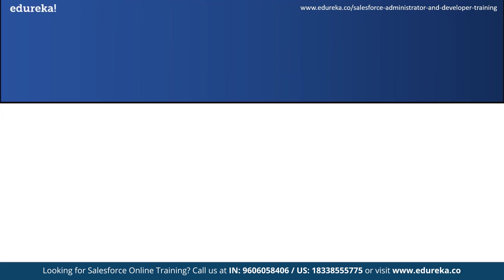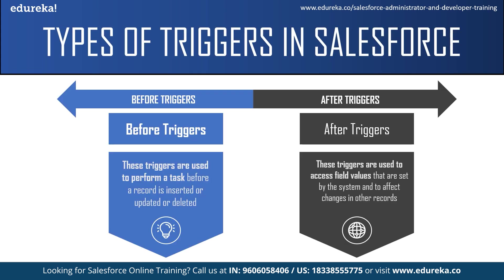There are two types of triggers in Salesforce: the before trigger and the after trigger. Before triggers are used to perform a task before a record is inserted, updated, or deleted — they are usually used to update or validate record values before they are saved to the database. After triggers are used to access field values already set by the system, such as a record's ID, date, or phone number field, and to affect changes in other records.